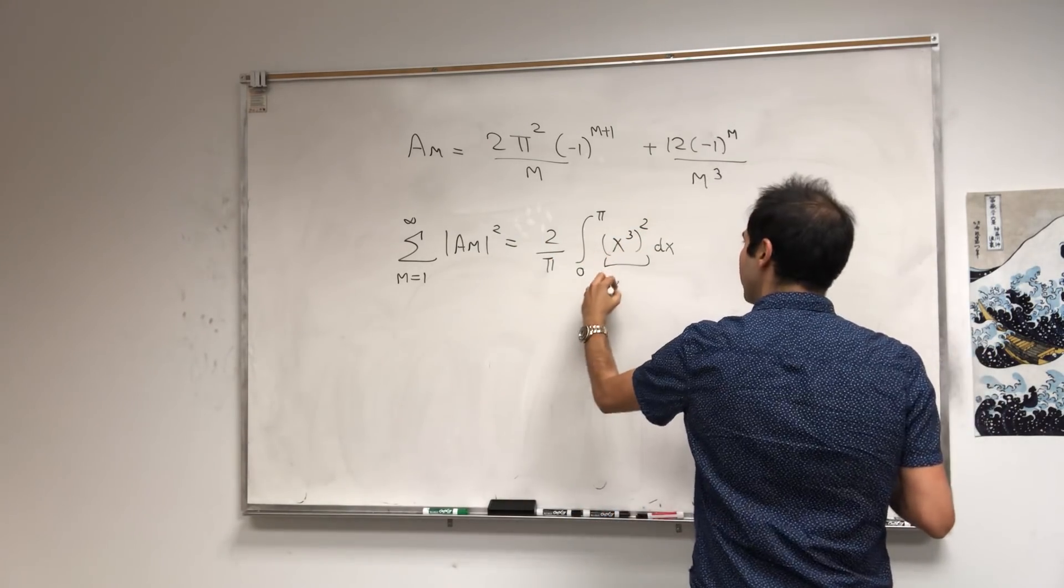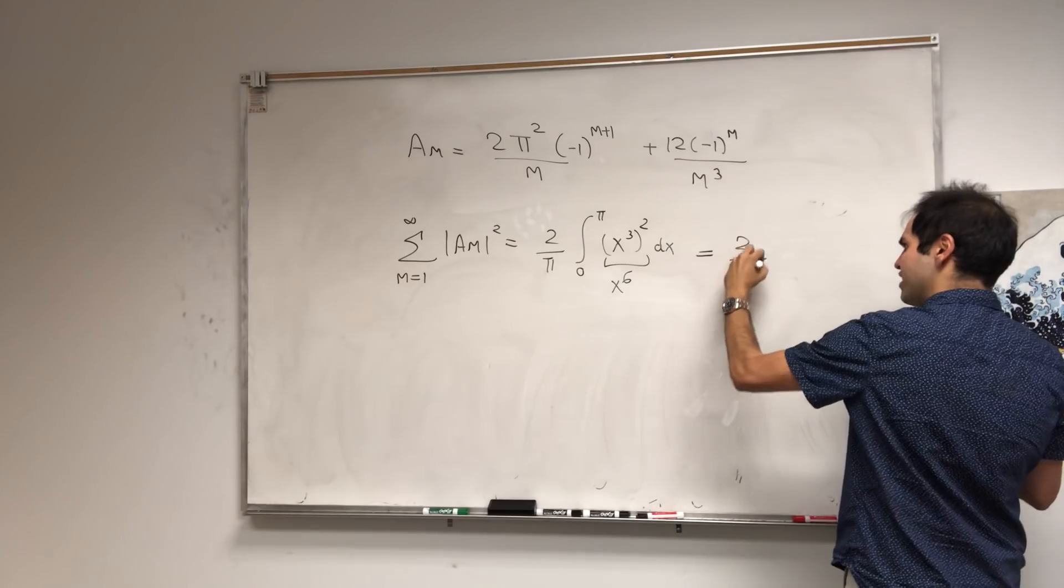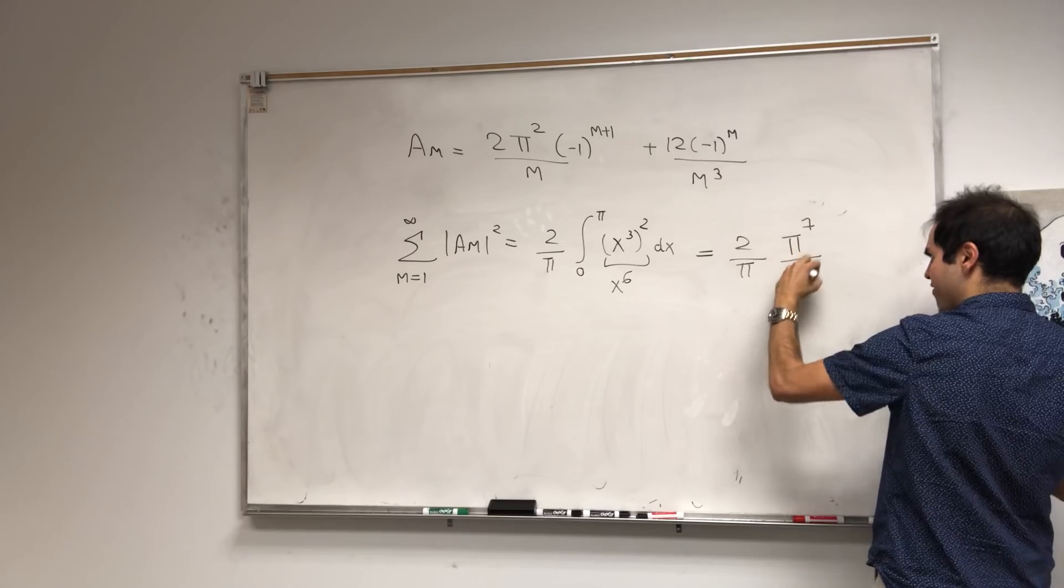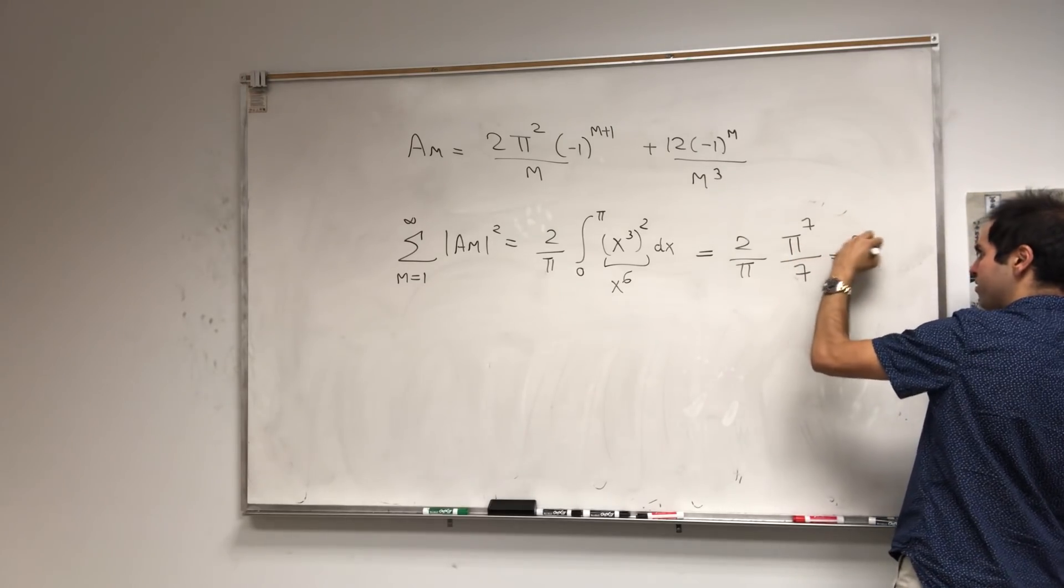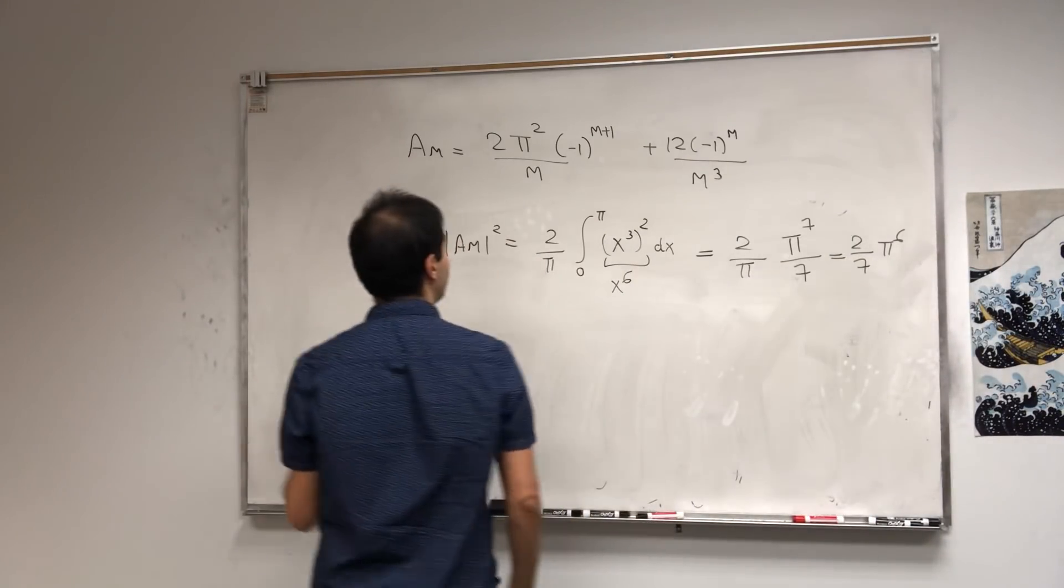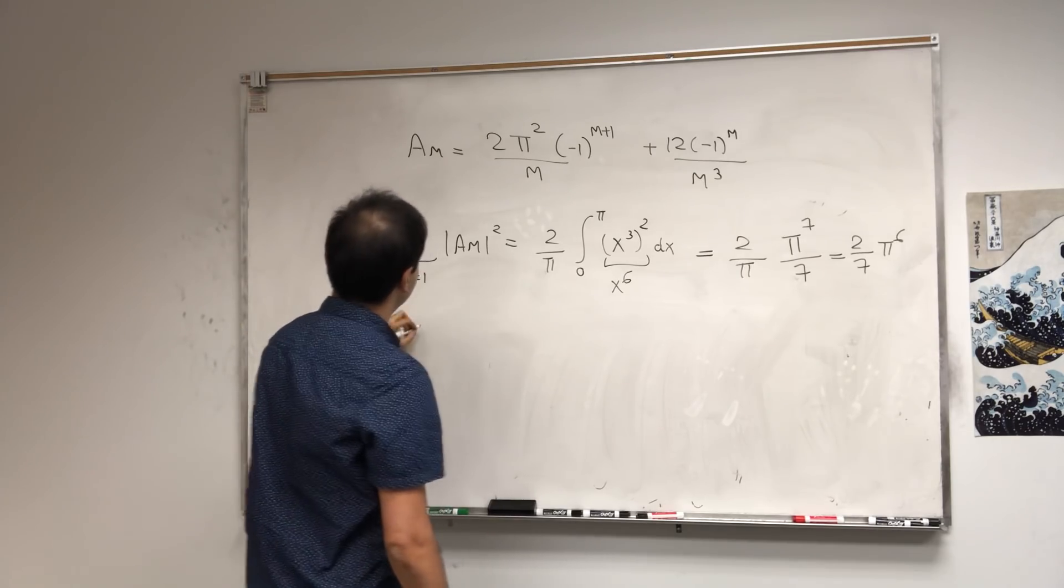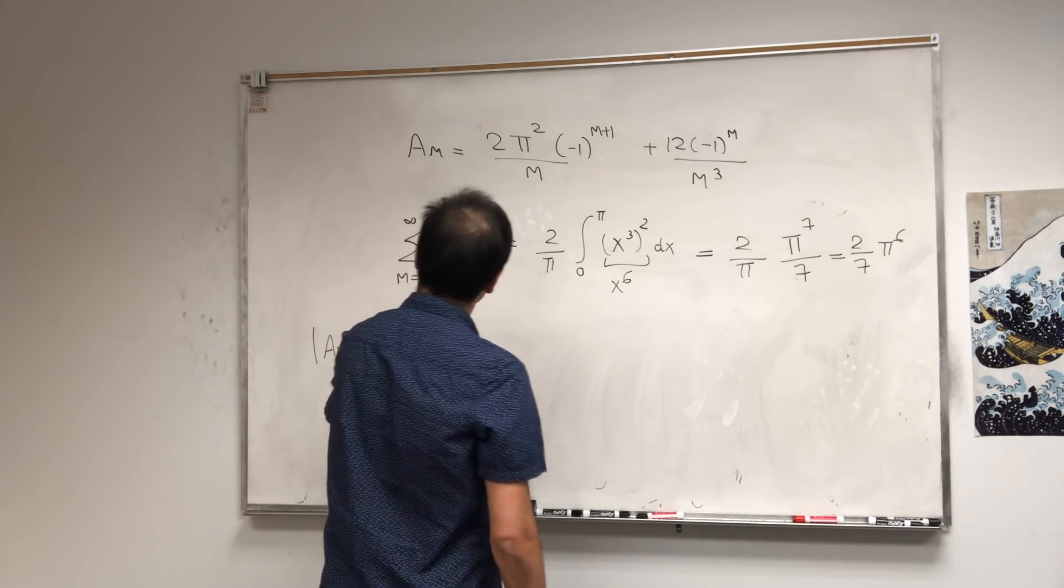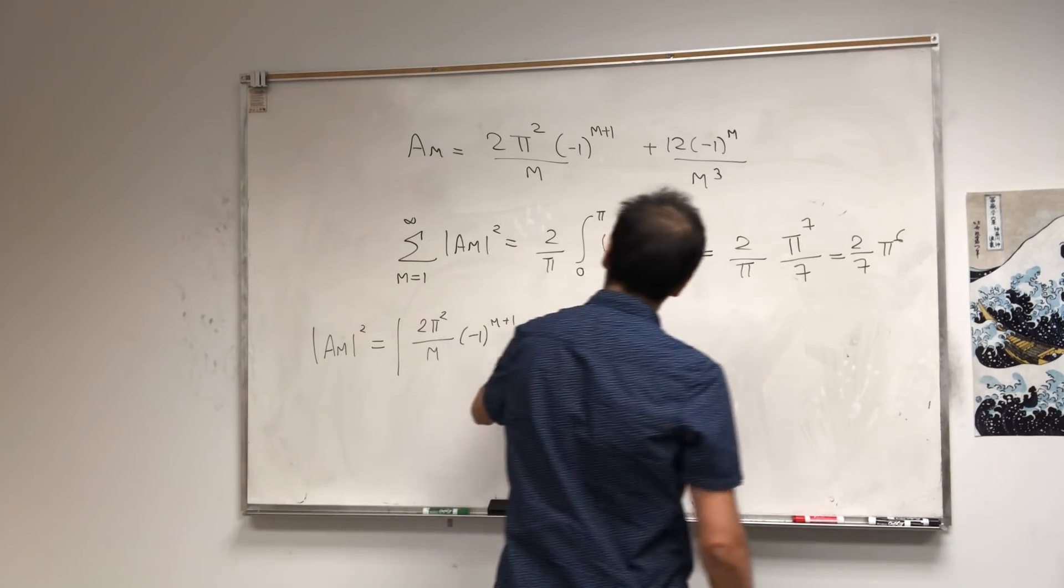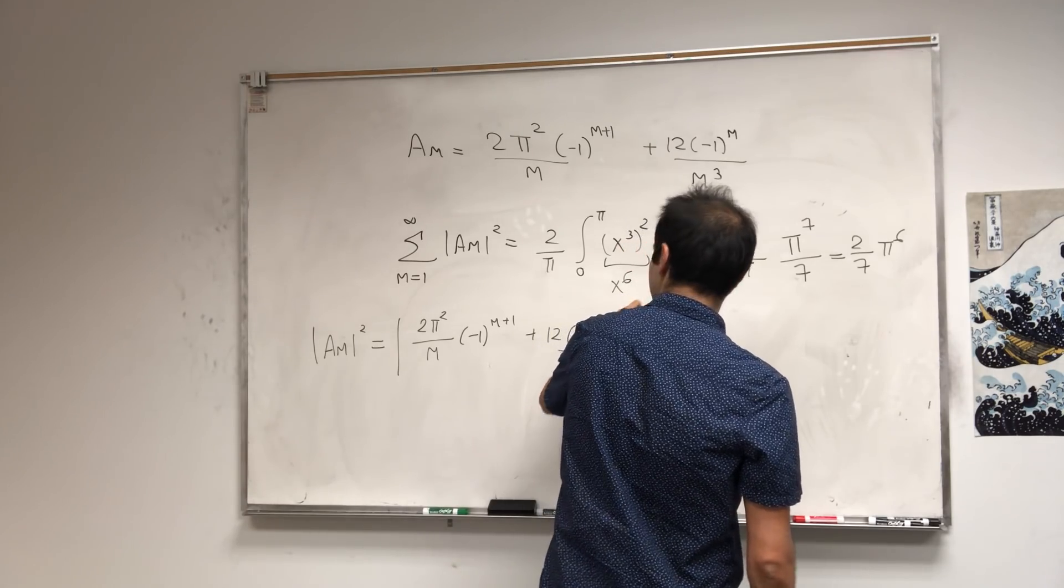Now, this one we can evaluate. This is x to the 6th, so an antiderivative is x to the 7th over 7, so 2 over 7 pi to the 6th. This one we can also evaluate, so take the squares of this, that becomes 2 pi squared over m times minus 1 to the m plus 1 plus 12 times minus 1 to the m over m cubed, squared.